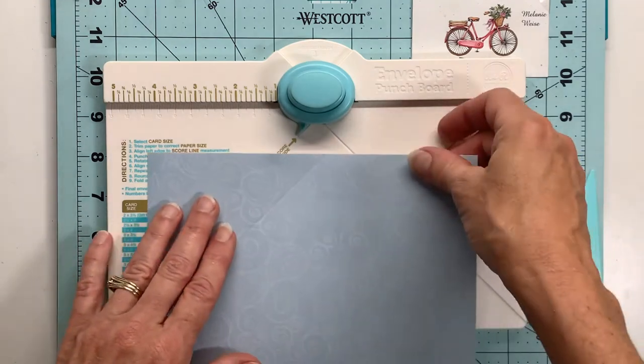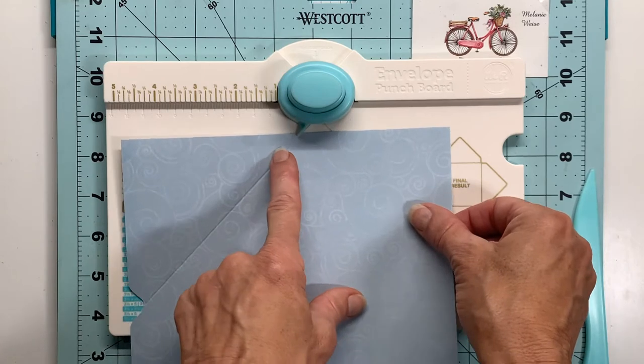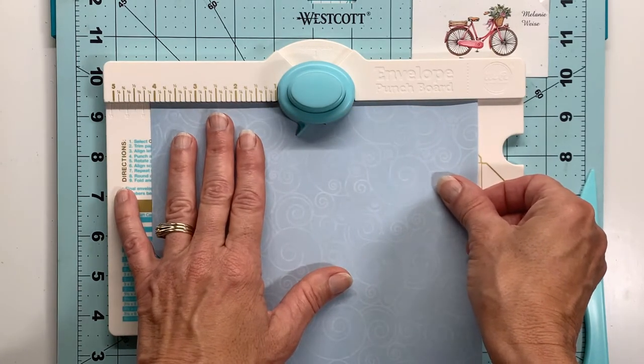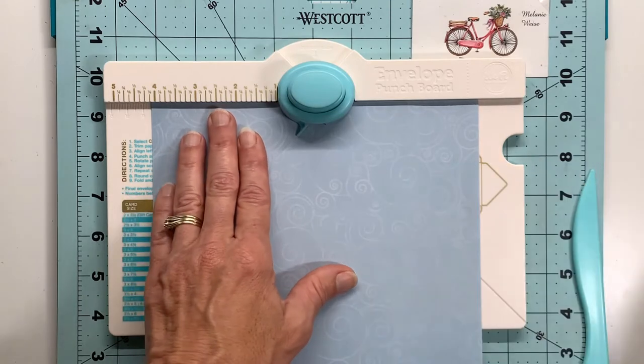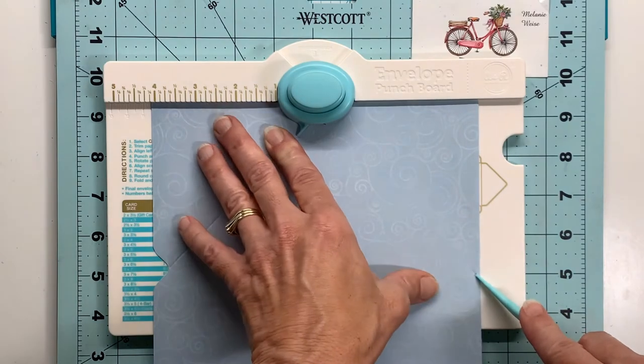I'm going to turn my paper 90 degrees and line that score line up with the score guide. You can see there is a little pointed piece on the punch and that helps you make sure that you are aligned with the score guide.